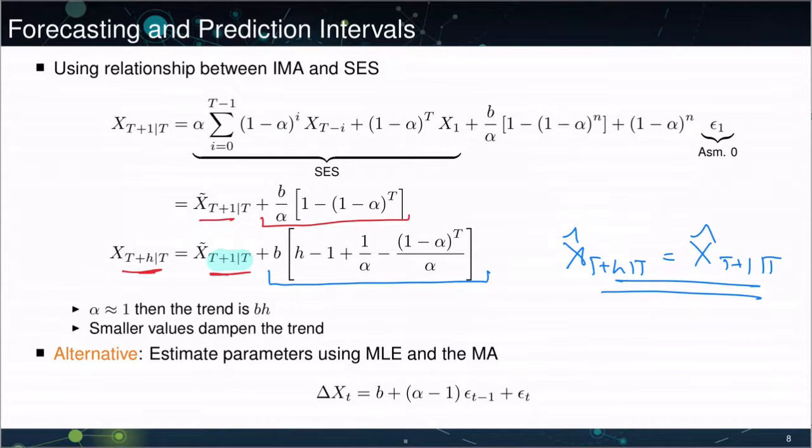So the theta forecasting method, in fact, is optimal for an integrated moving average with a time trend. We can see from this expression that if alpha hat is close to 1, then the time trend is simply b times h. If alpha hat is somewhat less than 1, then, you can assume t is large so we can ignore this last term, it's not particularly important. Then if alpha is less than 1, say alpha was 1 half, then that's going to have an impact on the trend because you're going to see that term appears here.